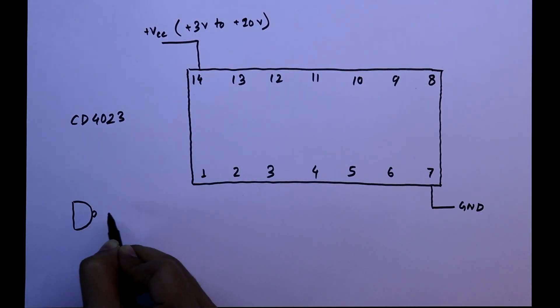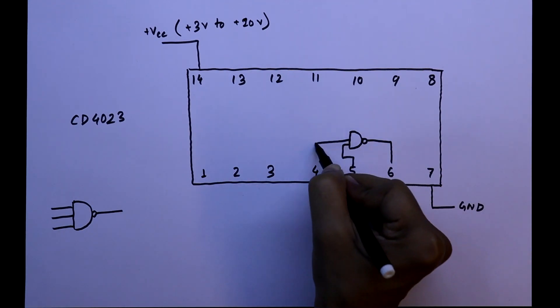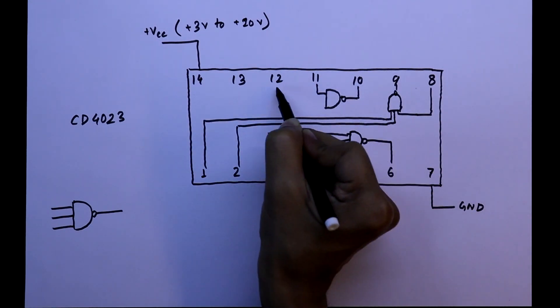This IC is 3 input NAND gate and it has 3 NAND gates. NAND gate 1, NAND gate 2 and NAND gate 3.